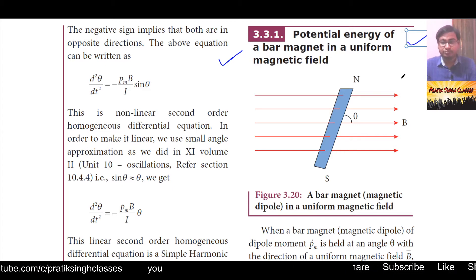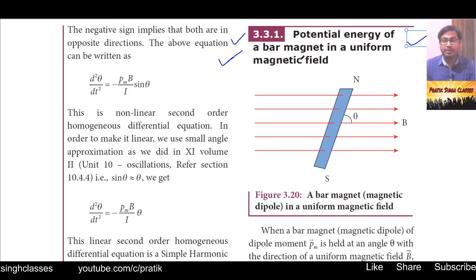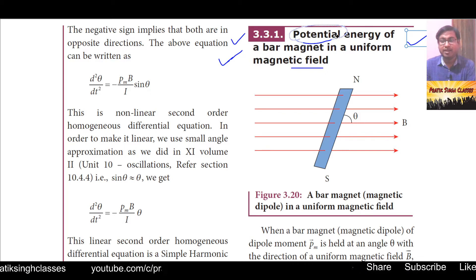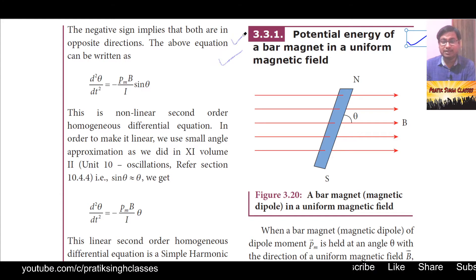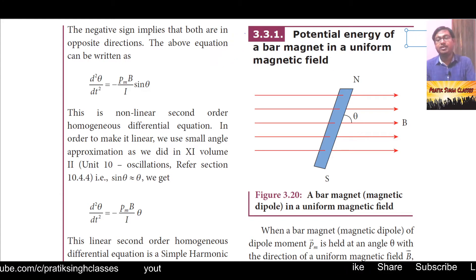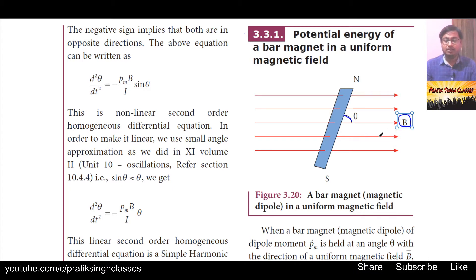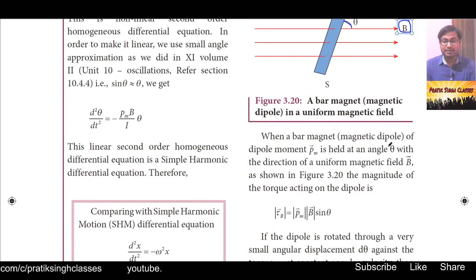In today's class we will start from section 3.3.1 — that is, potential energy of a bar magnet in a uniform magnetic field. The word 'potential energy' you know well; it is the energy stored in any object because of its position. In figure 3.20, we see a uniform magnetic field going from left to right, and a bar magnet aligned at an angle theta with the uniform magnetic field.